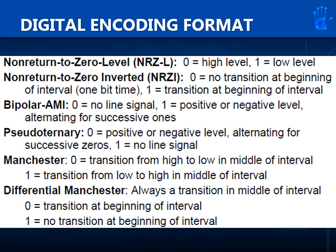Pseudo-ternary: when bit is 0, positive or negative level, alternating for successive zeros; when bit is 1, there will be no line signal. For Manchester: when bit is 0, transition from high to low in the middle of the interval; when bit is 1, transition from low to high in the middle of the interval. For differential Manchester: always a transition in the middle of the interval. When bit is 0, there is also a transition at the beginning of the interval. When bit is 1, there is no transition at the beginning of the interval.